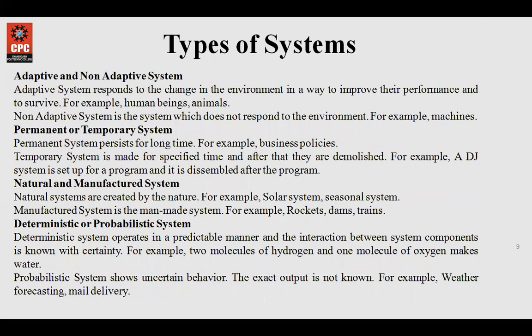Then comes the permanent or the temporary system. Permanent systems are the ones that remain as such — for example, the policies and visions of any organization. They are stated when the organization is founded and then are never changed. Temporary systems, for example, a DJ system is set up for a program and disassembled after the program. Similarly, when I use a calculator on my computer for some time and then close it — that is a temporary system. Any system that we use for a certain time and then close is a temporary system.